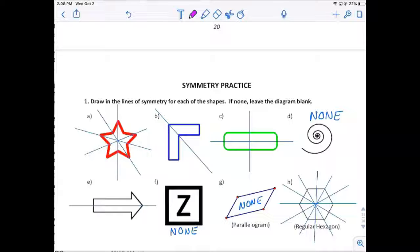there's nowhere you could fold that along a line. So, none. The arrow could be folded up and down. The Z cannot be folded. Parallelogram cannot be folded. The hexagon has six.